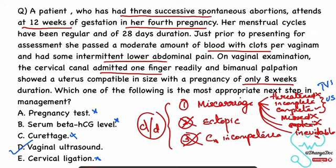Suppose the question were worded as: a patient came with bleeding per vaginum and abdominal pain after three months of amenorrhea — then we would need to rule out pregnancy first. In that case, option A, the pregnancy test, would be the correct answer. So the correct option in this question is option D, vaginal ultrasound.